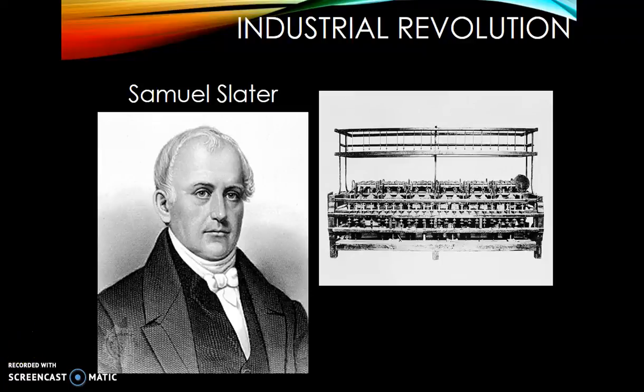We're going to pick up with the second section of this unit, which is industrialization and the industrial revolution. The industrial revolution really begins in Great Britain with Samuel Slater. In 1793, Samuel Slater builds the textile mill — the first successful textile mill.